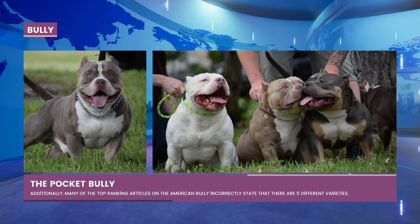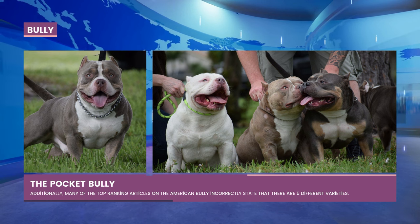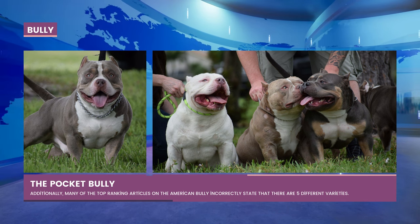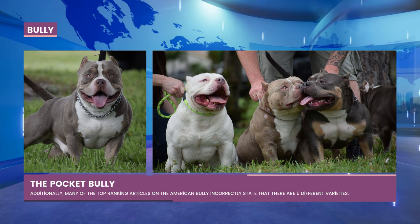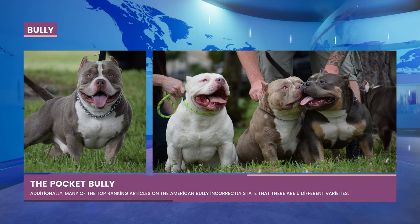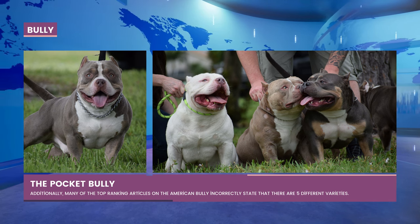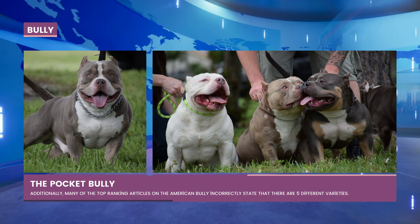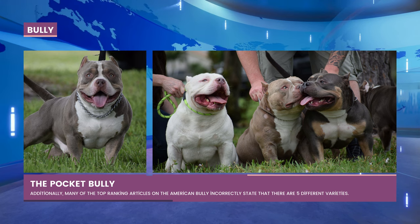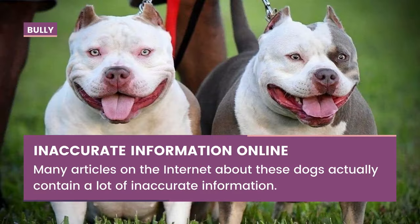There are four varieties or classes in the American Bully breed, which are modifications to the standard for classification and useful for separating the various types in conformation events, also known as dog shows. Many articles on the American Bully that have received high rankings make the incorrect claim that there are five different varieties. There were initially five, but in 2014 the ABKC eliminated the extreme class. Below, we analyze each of the four American Bully varieties.